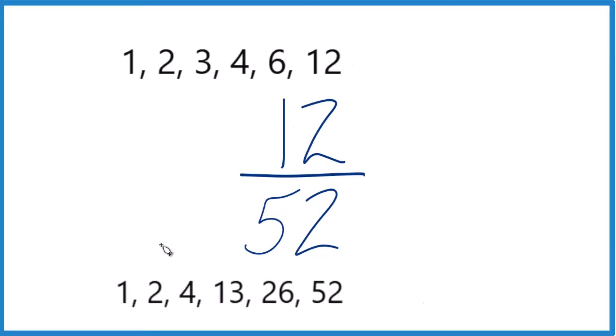So we look here, 1, same, 2, 3, no, 4, and it looks like 4 is the greatest common factor, greatest factor they have in common.